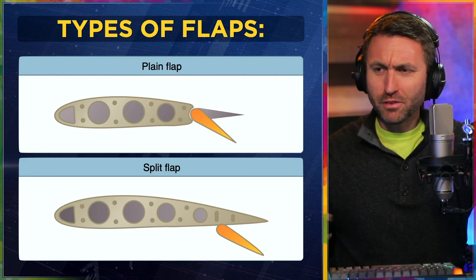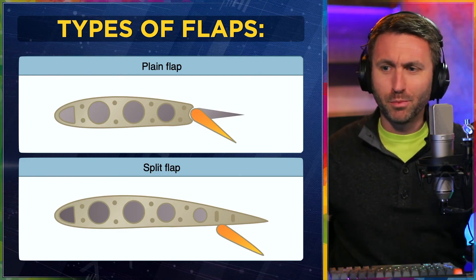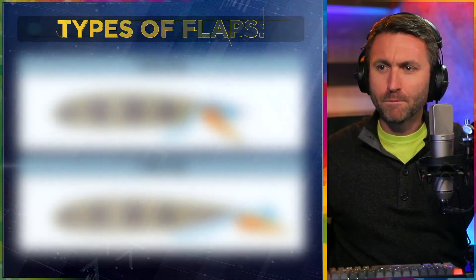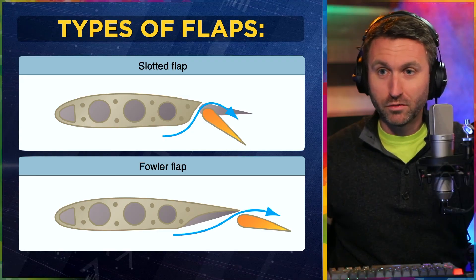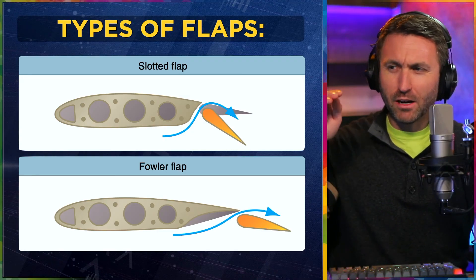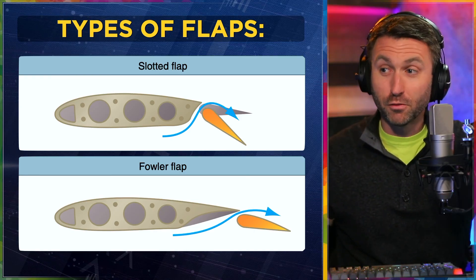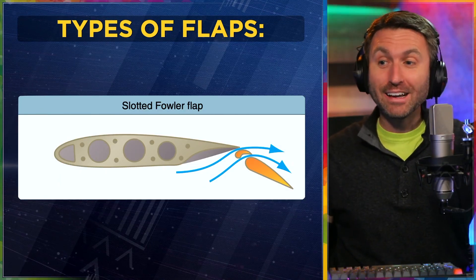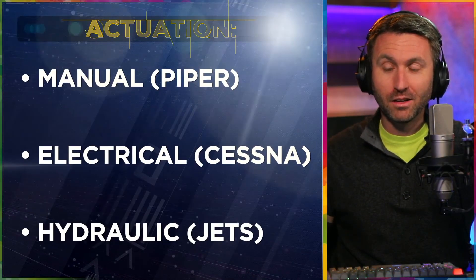There are different types of flaps: a plain flap, a split flap — the pictures are right on your screen. You've probably seen plain and split before. You've definitely seen the slotted flap — if you fly a Cessna 152 or 172, that's a slotted flap. It allows a little bit of airflow between the flap and the rest of the wing surface. Then there's the Fowler flap — you see those a lot on airliners, they actually extend out of the back. And then there is the slotted Fowler flap, which is more complex and not as common.